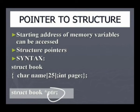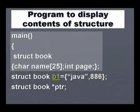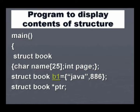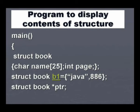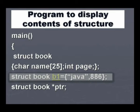Now we will see a small example of how to display the contents of a structure using this pointer variable. You have the main function, and again the declaration of the structure and structure tag. Two variables are there of different data types — one is a character string, the other one is integer — enclosed within braces terminated by a semicolon. This is where you initialize the members: struct book b1. Now b1 is a plain structure variable having values for the members — first is a string value, the second is an integer value.